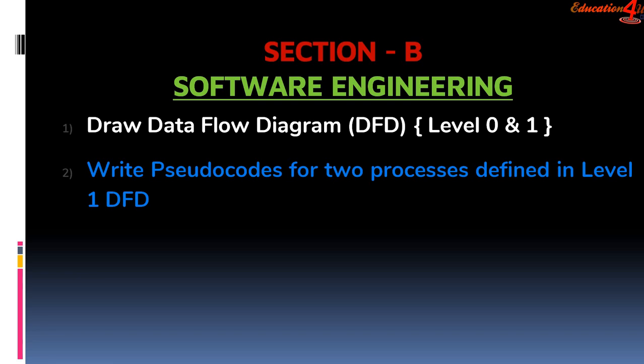So what you can do is, you just write pseudo code now itself about login system. Then you will be able to write the one pseudo code easily. The second one will be of the core system that is other process that is defined in the DFD level 1.